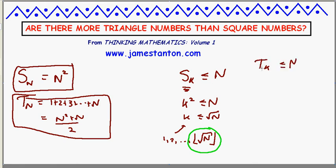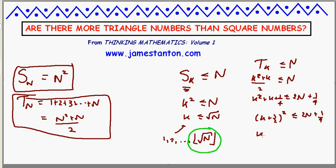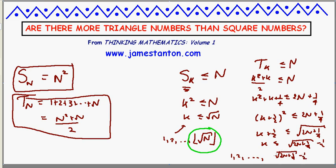Now, how many triangle numbers are less than or equal to n? We want k squared plus k over 2 to be less than or equal to n — that is, k squared plus k less than or equal to 2n. This is a little quadratic, and k squared plus k is almost a perfect square. Adding a quarter to both sides gives us k plus one-half squared, and we want that to be less than 2n plus a quarter. Taking square roots, we need k plus one-half to be less than the square root of 2n plus a quarter. So k must be less than the square root of 2n plus a quarter, minus one-half — and the count is that expression rounded down to the nearest integer.